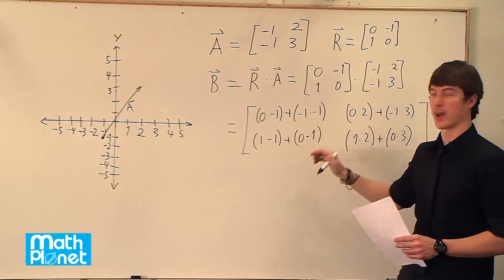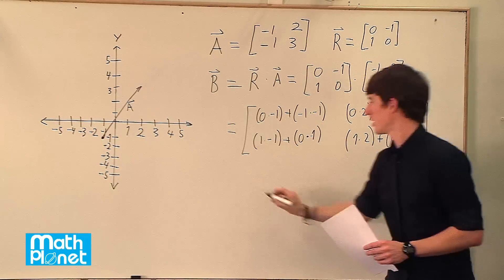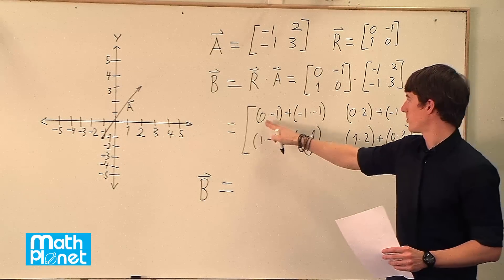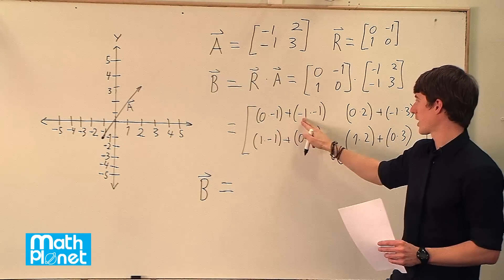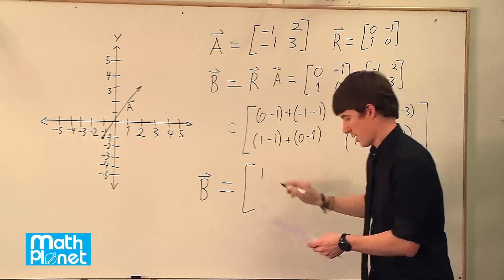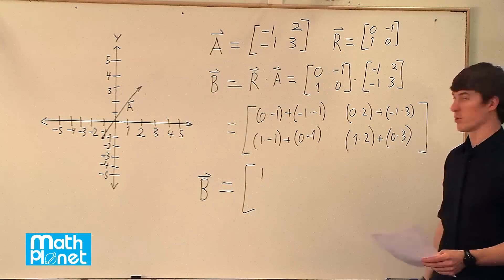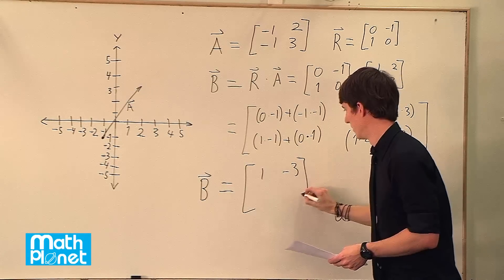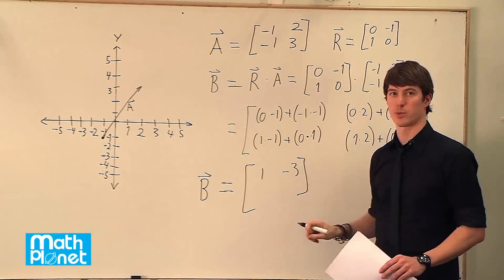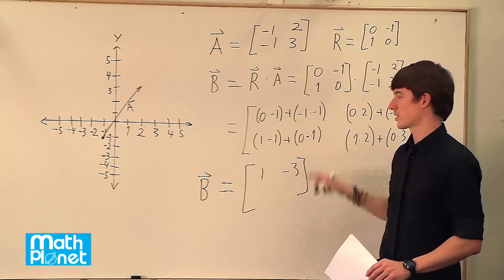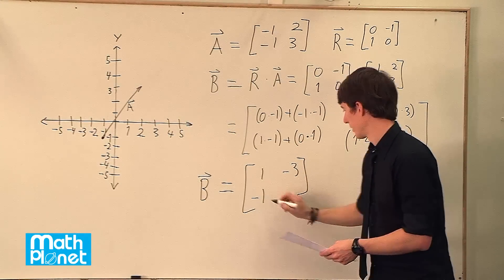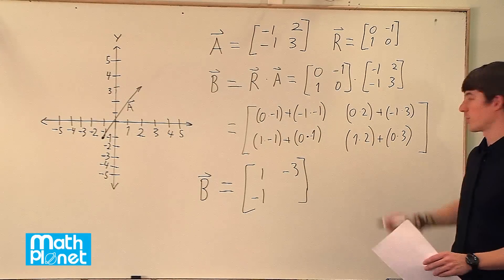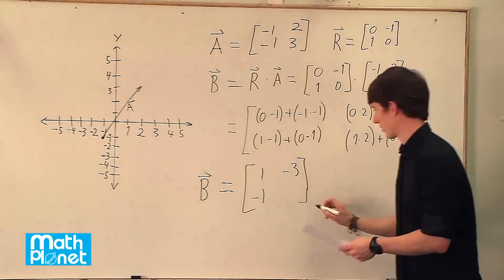So now we just need to take this and simplify it by adding and multiplying these out. This vector B is going to be 0 times negative 1, which is 0, plus negative 1 times negative 1, which is 1. Then we have 0 times 2 is 0, plus negative 1 times 3, so that's negative 3. And then we have 1 times negative 1, which is negative 1, plus 0 times negative 1, which is 0, so we just have negative 1. And finally we have 1 times 2, which is 2, and 0 times 3, which is 0, so this is just 2.